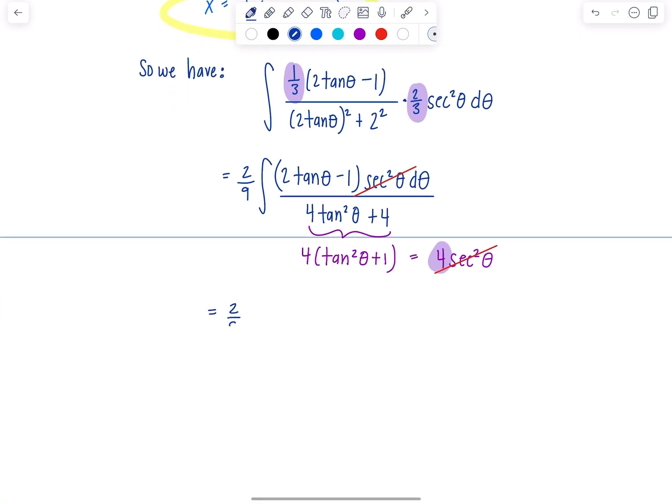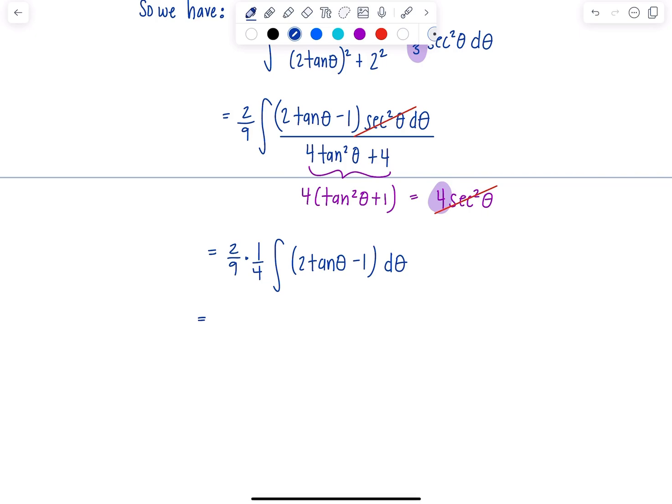So I have 2 ninths, this 4 is in the denominator, so if I take it outside, it's 1 fourth. This secant squared theta is now canceled out. So all that's left is 2 tan theta minus 1 d theta. 2 ninths times 1 fourth, that's just a 2, I have 1 18th antiderivative of 2 tan theta. That's 2 natural log absolute value of secant theta minus theta. Plus I'm going to say C1 because I have another integral coming up.